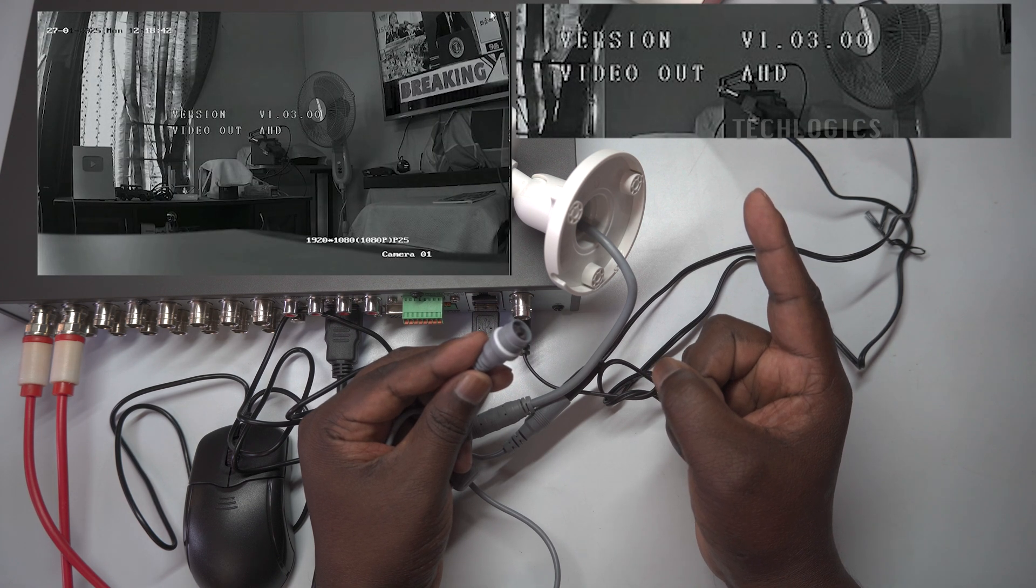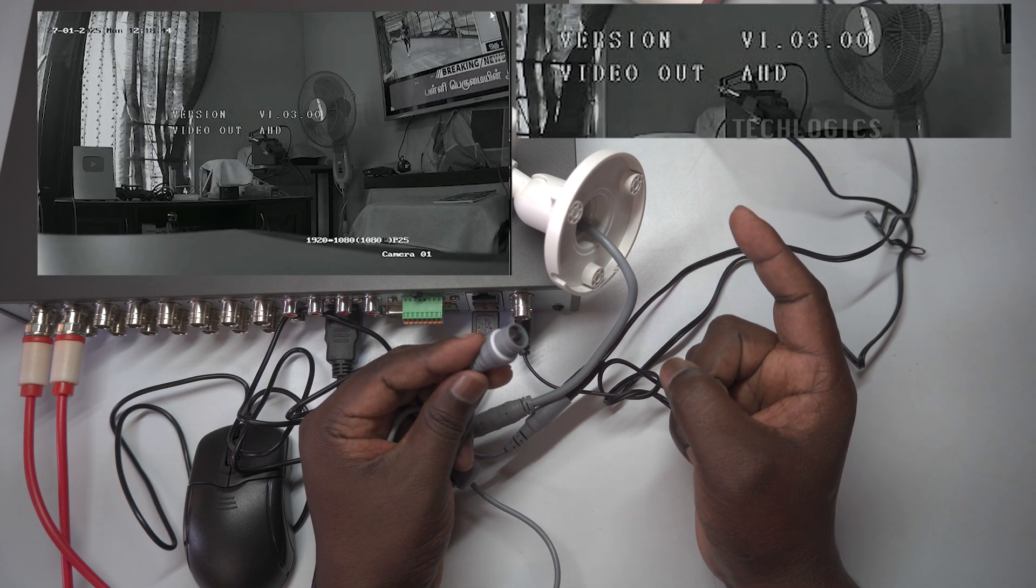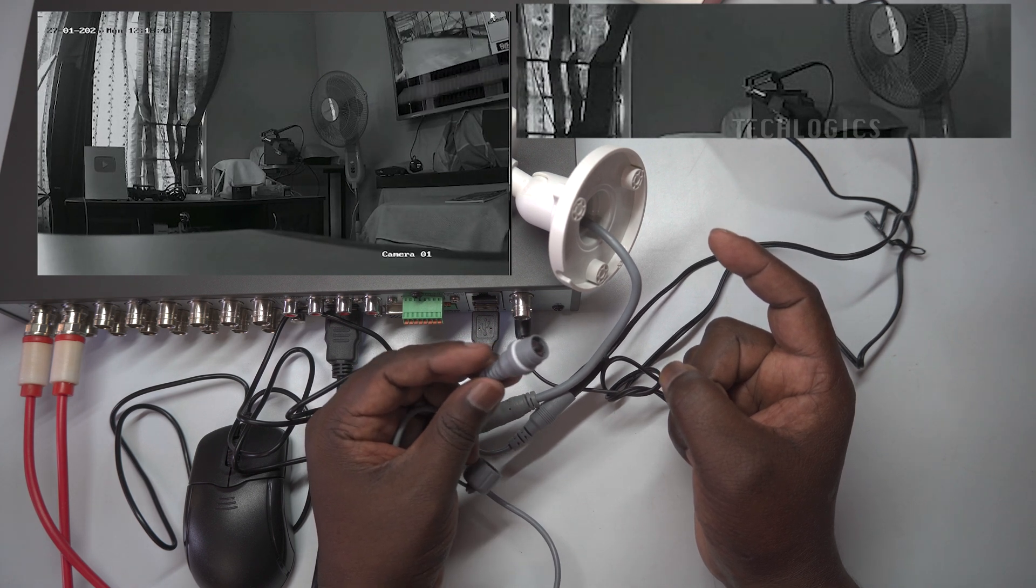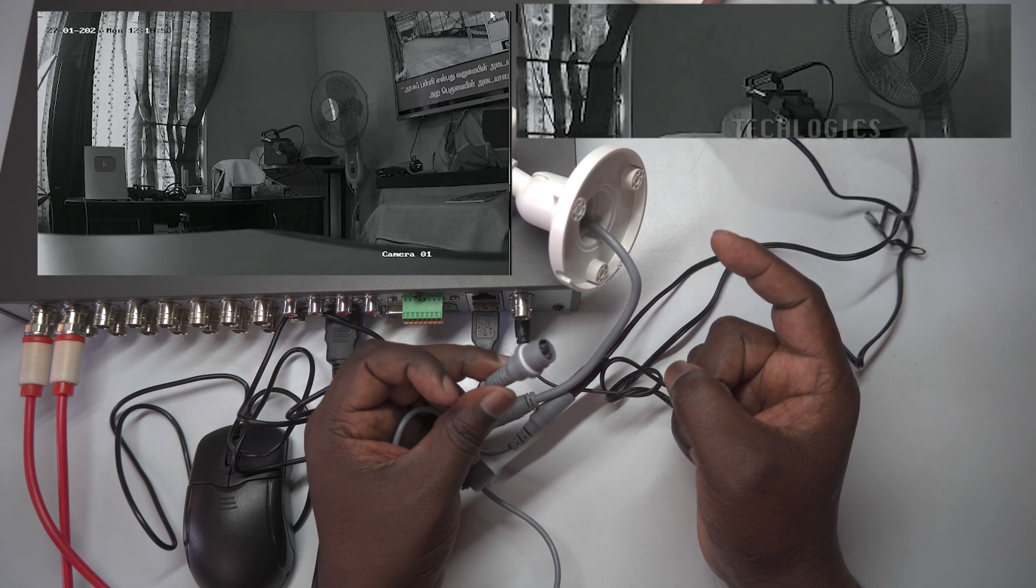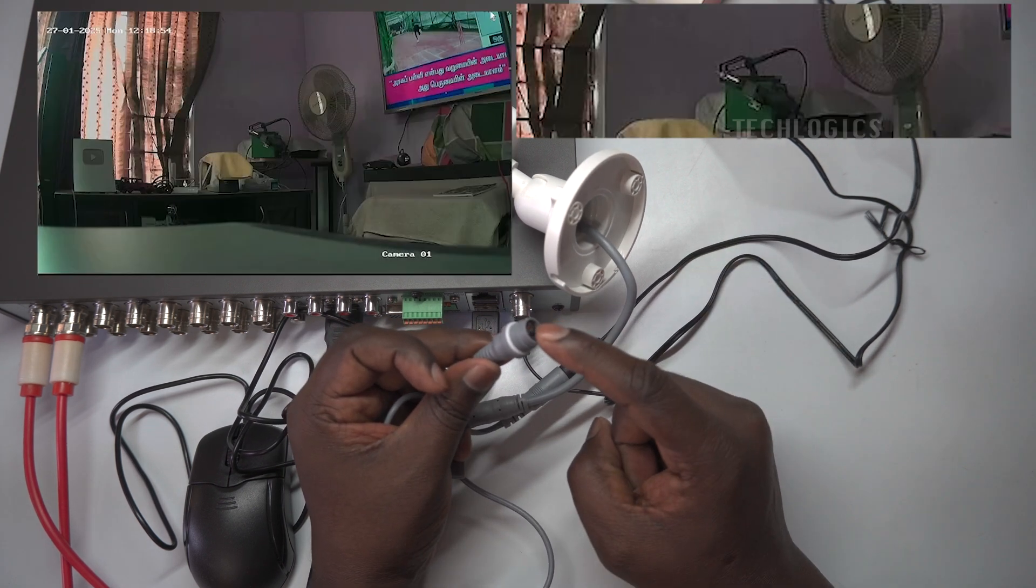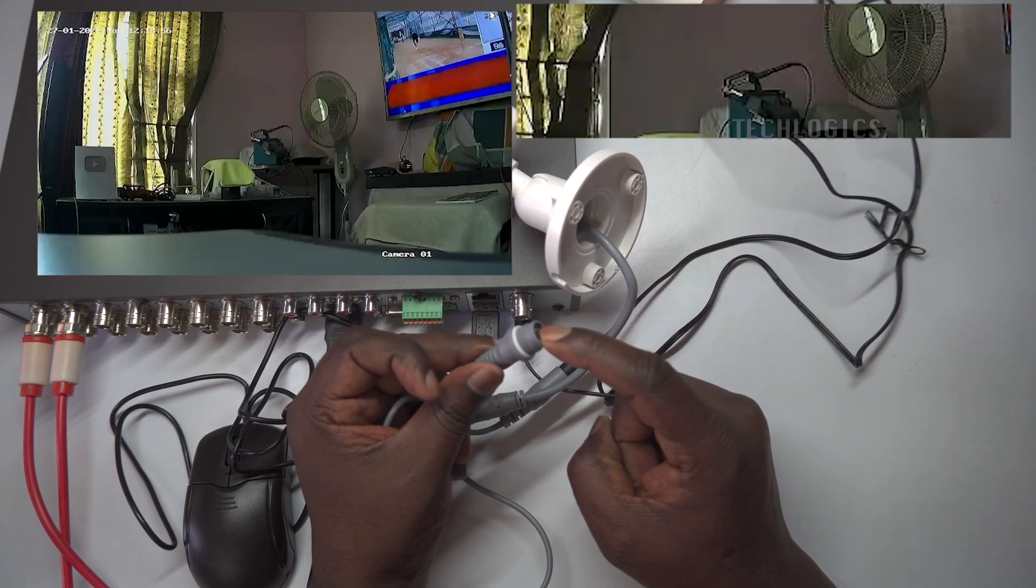In this demonstration, we will be using a Hikvision DVR to illustrate the process. If you wish to connect it to a different brand of DVR and the camera feed does not display on your monitor, you can simply switch the video signal to match your DVR using the method I will demonstrate.